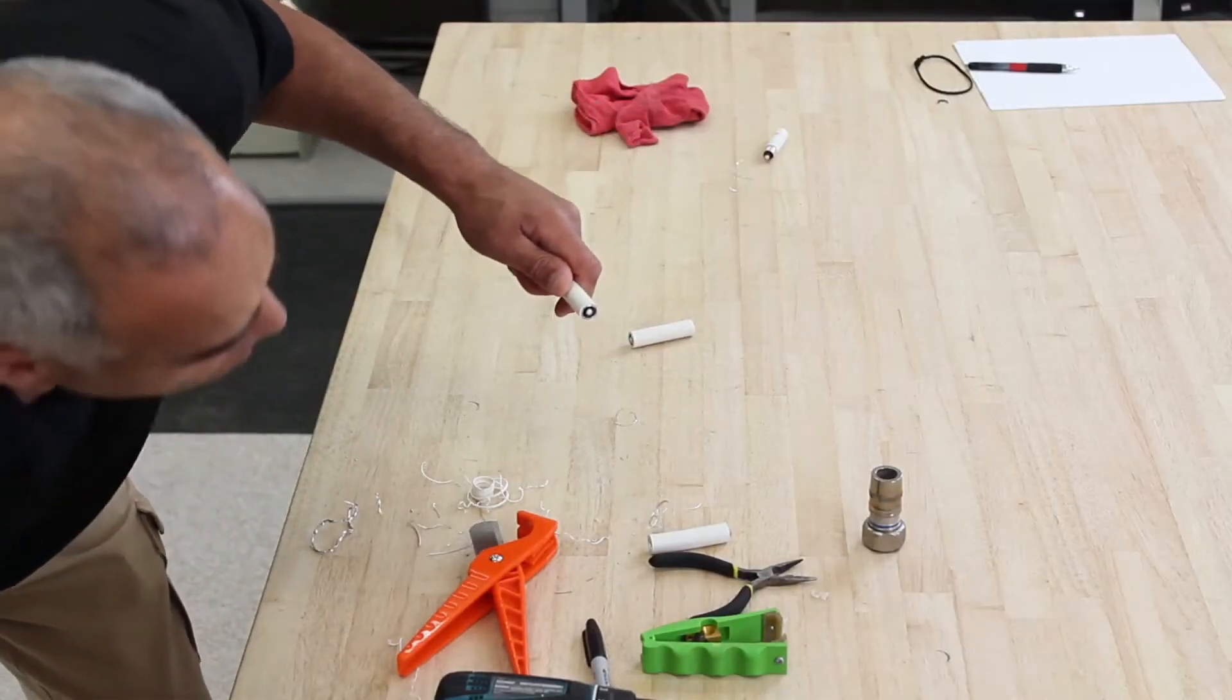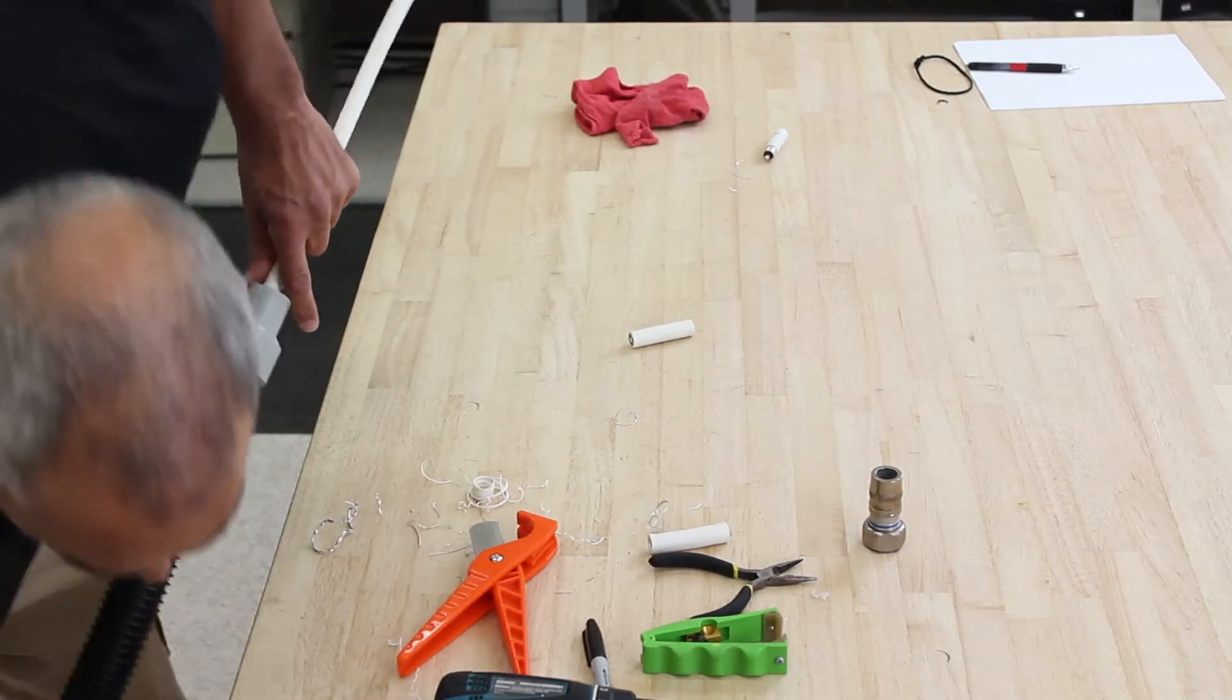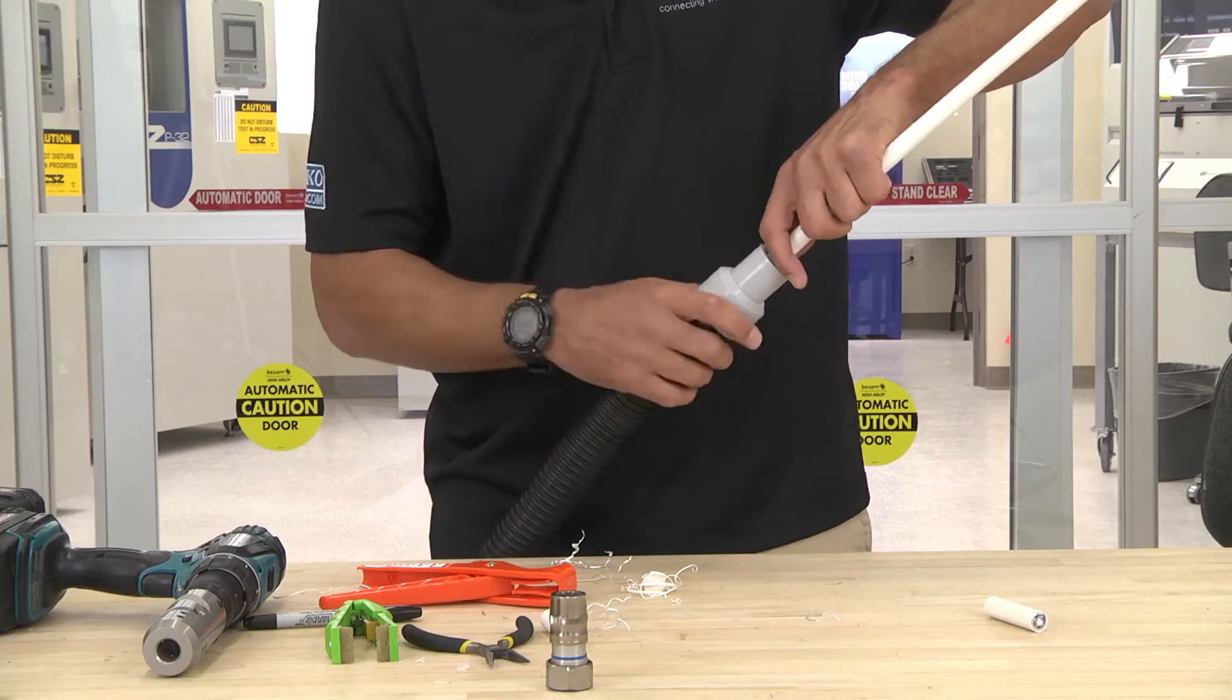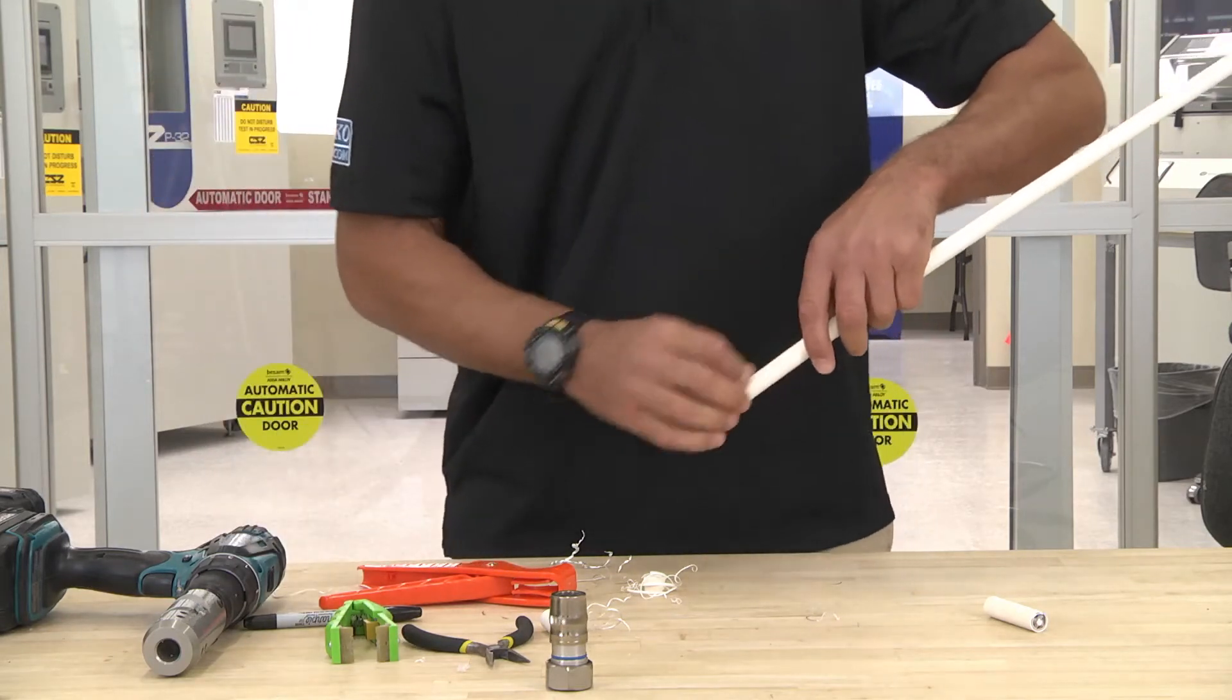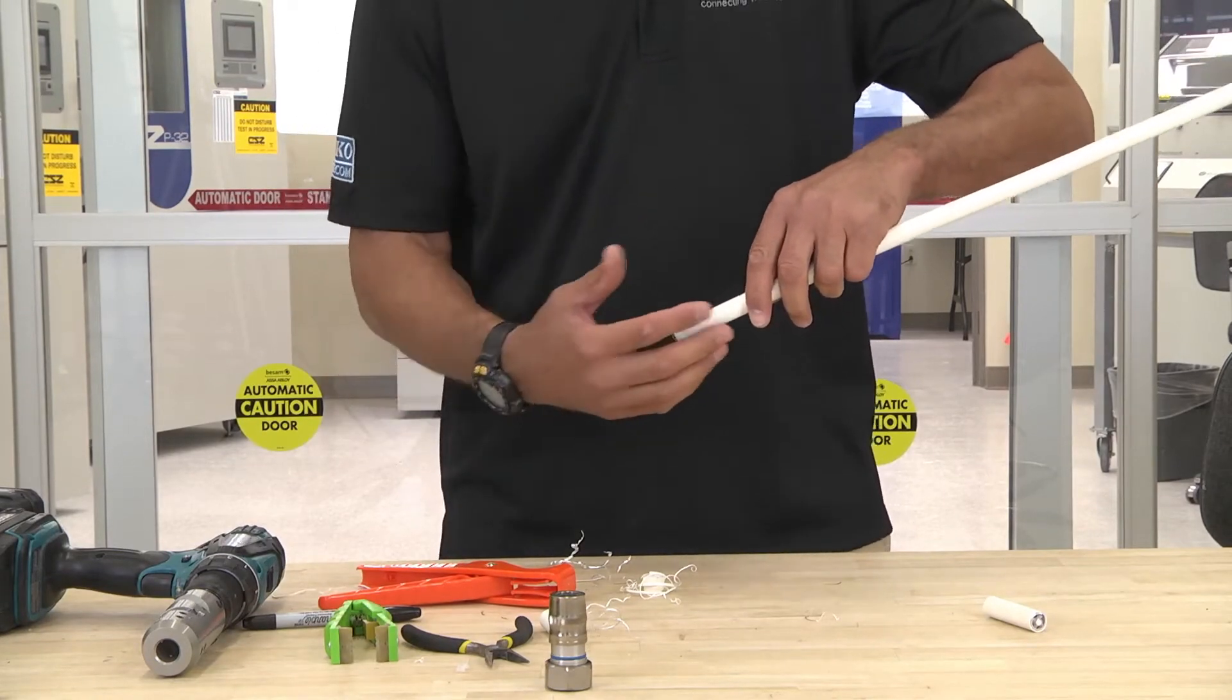At this point you want to take your shop vac and you want to tap your cable as you're vacuuming the dielectric material out. You want to have your cable facing down, that way if there's any loose particles it'll be easy for it to be vacuumed out.